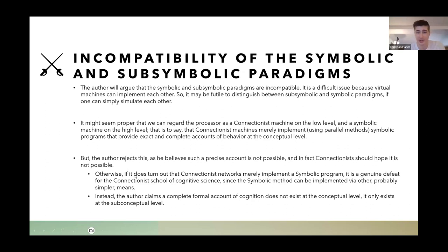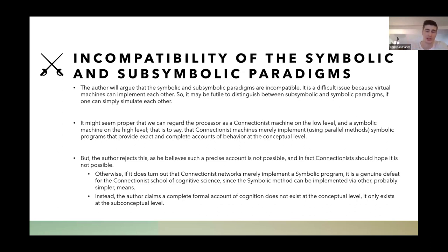If it turns out that a connectionist network merely implements a symbolic program, it will be a genuine defeat for the connectionist school of cognitive science, since the symbolic method can be implemented by other, perhaps simpler, means. So instead, the author claims there is no formal account of cognition that exists at the conceptual level — a precise definition can only be given at the sub-conceptual level.